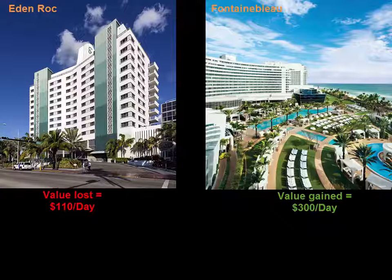However, what if the court had ruled in favor of the Eden Rock? What if the court said, "Fountain Blue, you have to stop building"? Well, according to the Coase Theorem, we could still end up with the allocatively efficient outcome if the parties are allowed to bargain. So what would a bargain look like in this instance?